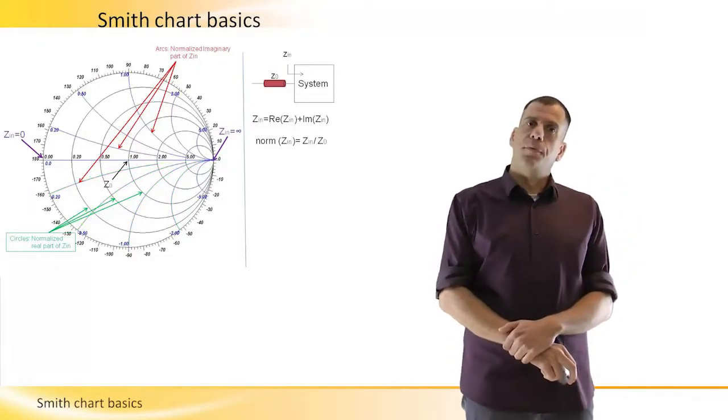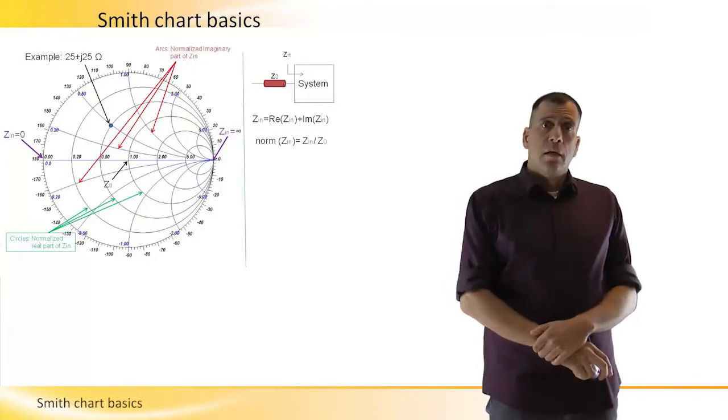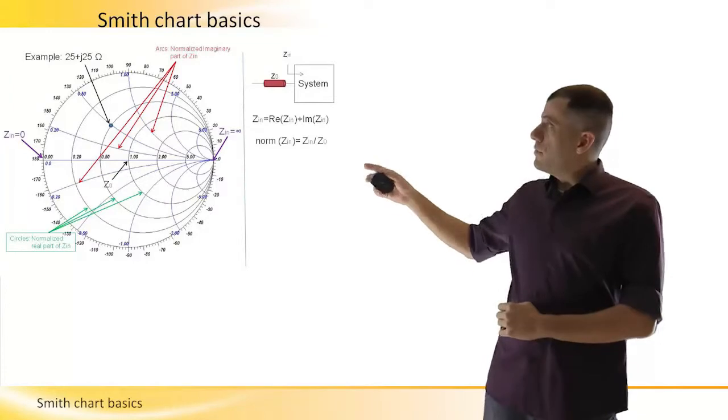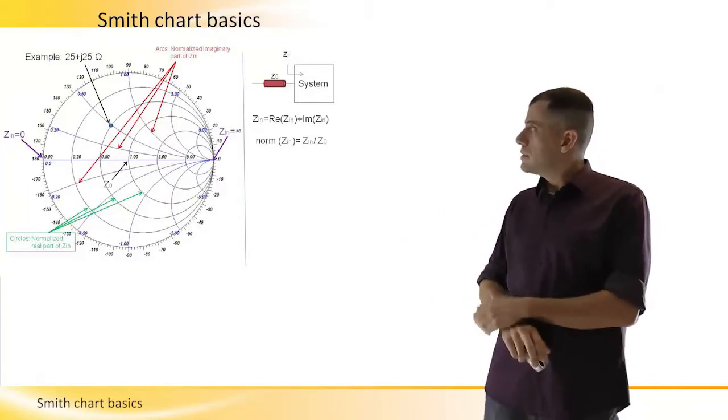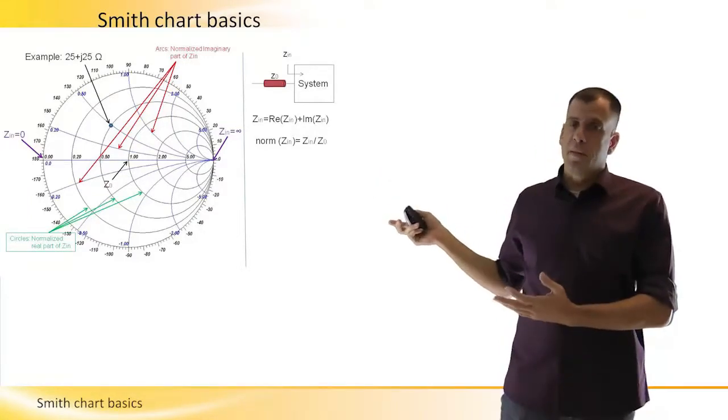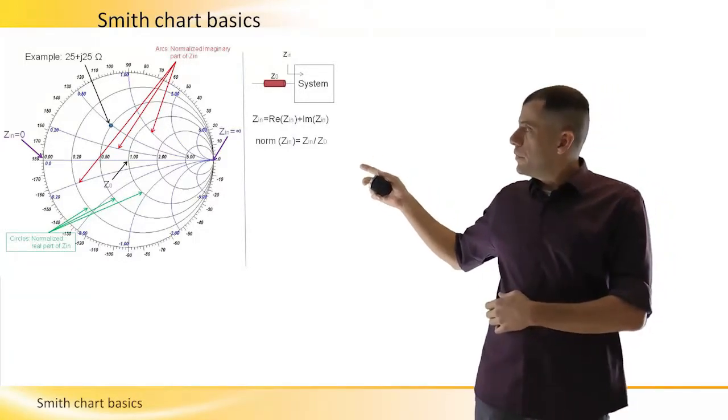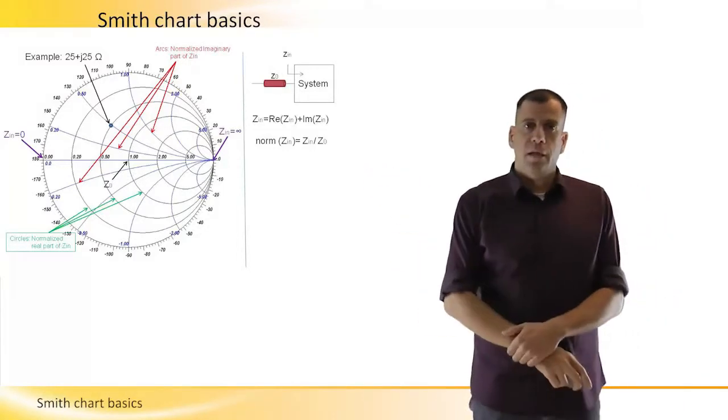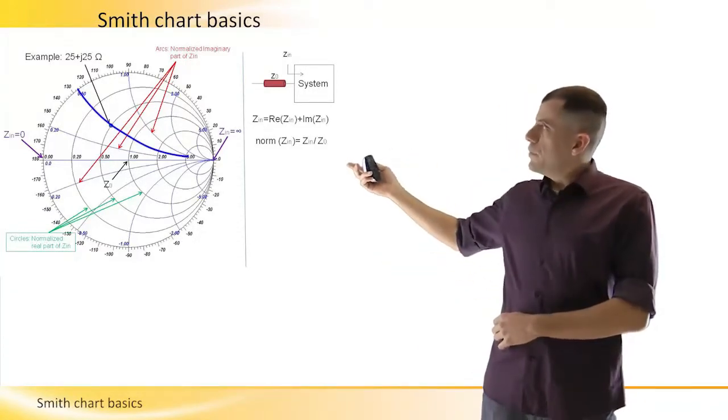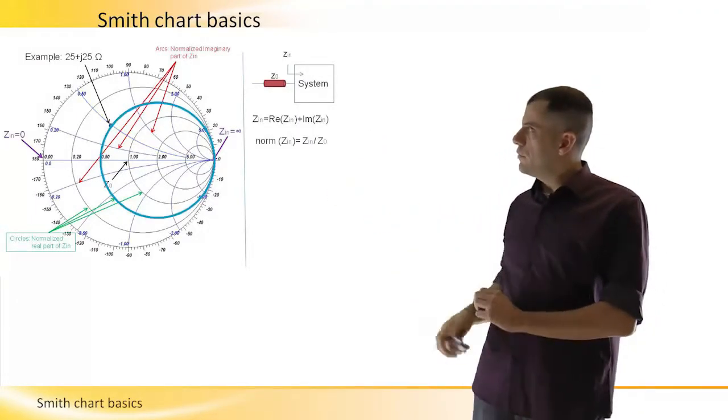Now here is an example of the input impedance 25 plus j25 ohm, which is for a 50 ohm system, meaning a system that has a transmission line of 50 ohm in its terminal. We can say that this is the characteristic impedance of the system. The normalized impedance would be 0.5 plus j0.5. In this case, we see the impedance is located on the arc 0.5 for the imaginary part and on the circle 0.5 for the real part.